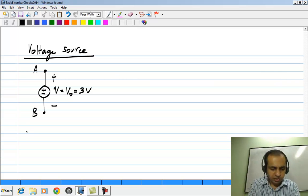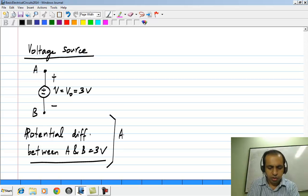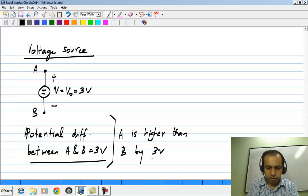What it means is that the potential difference between A and B is 3 volts, or more specifically point A is higher than B by 3 volts.